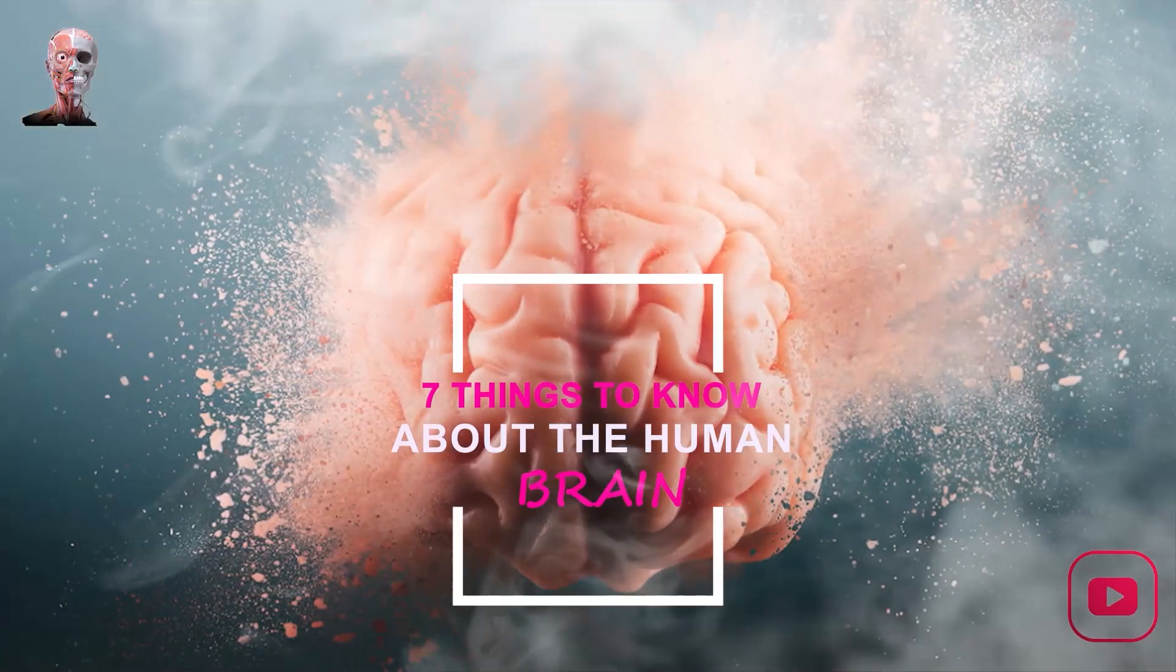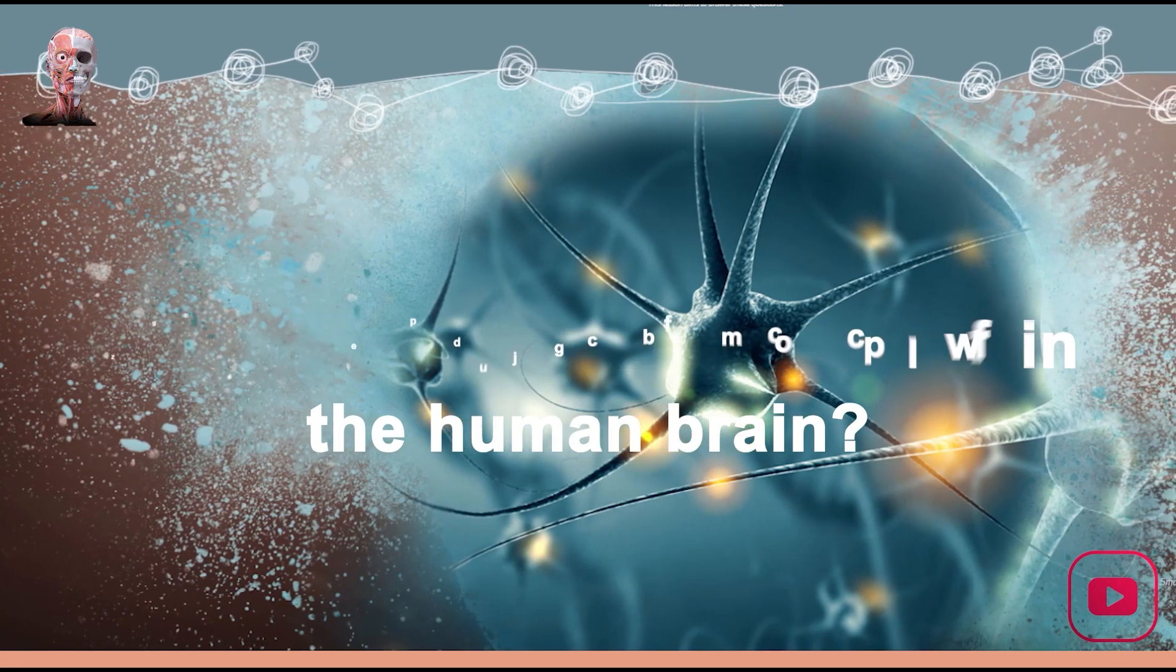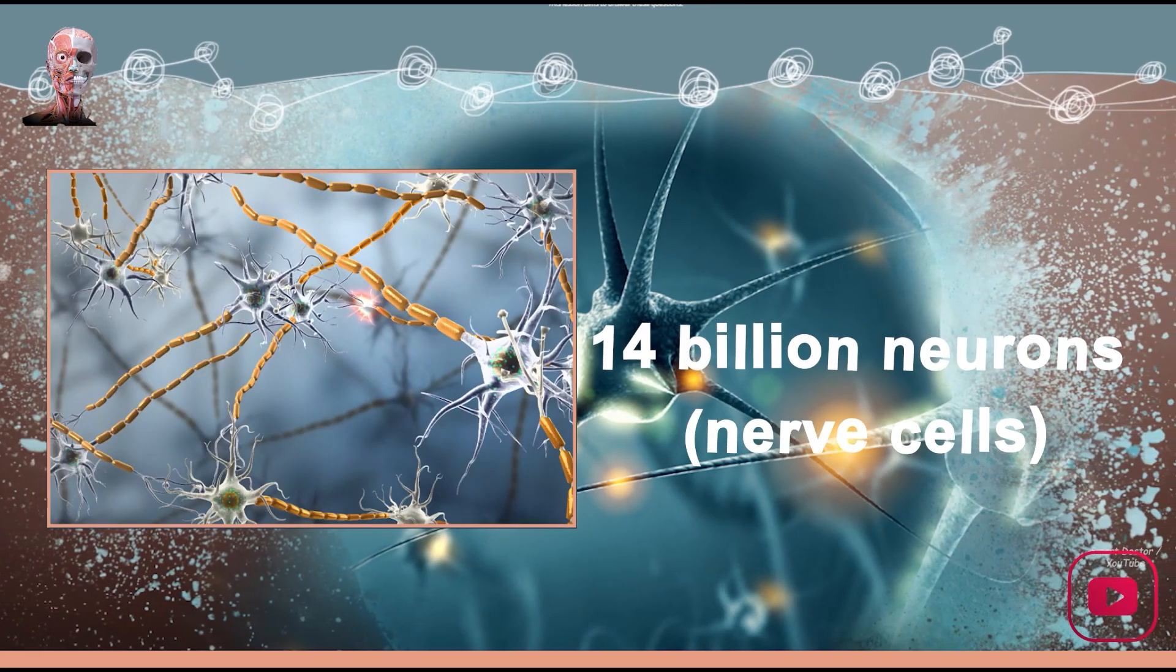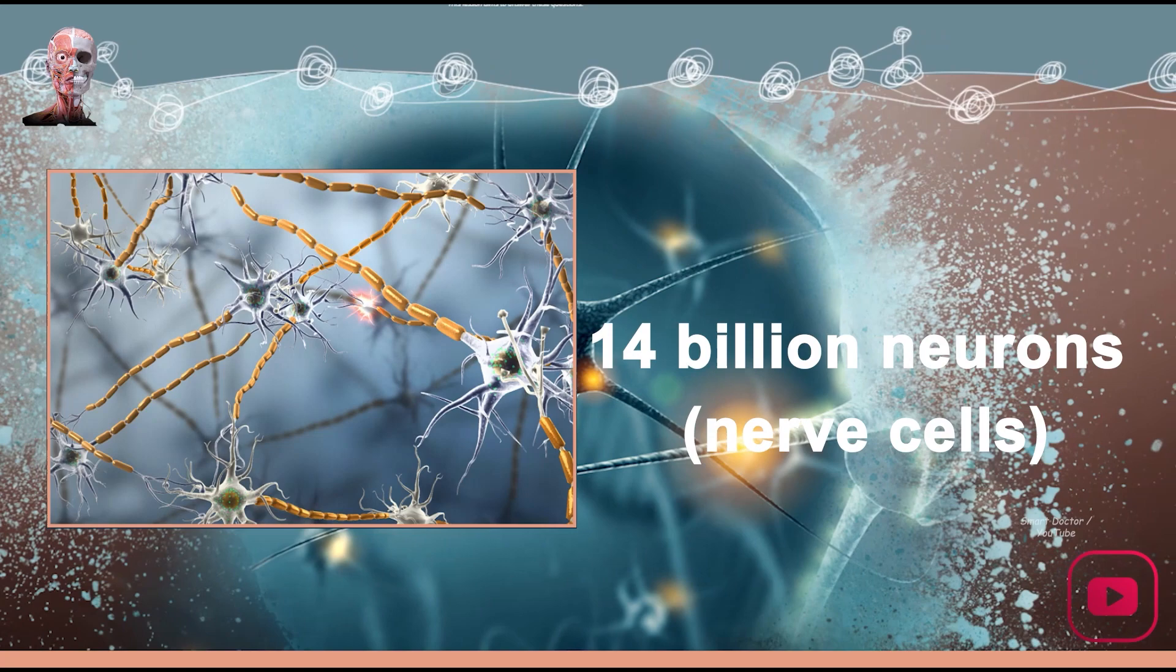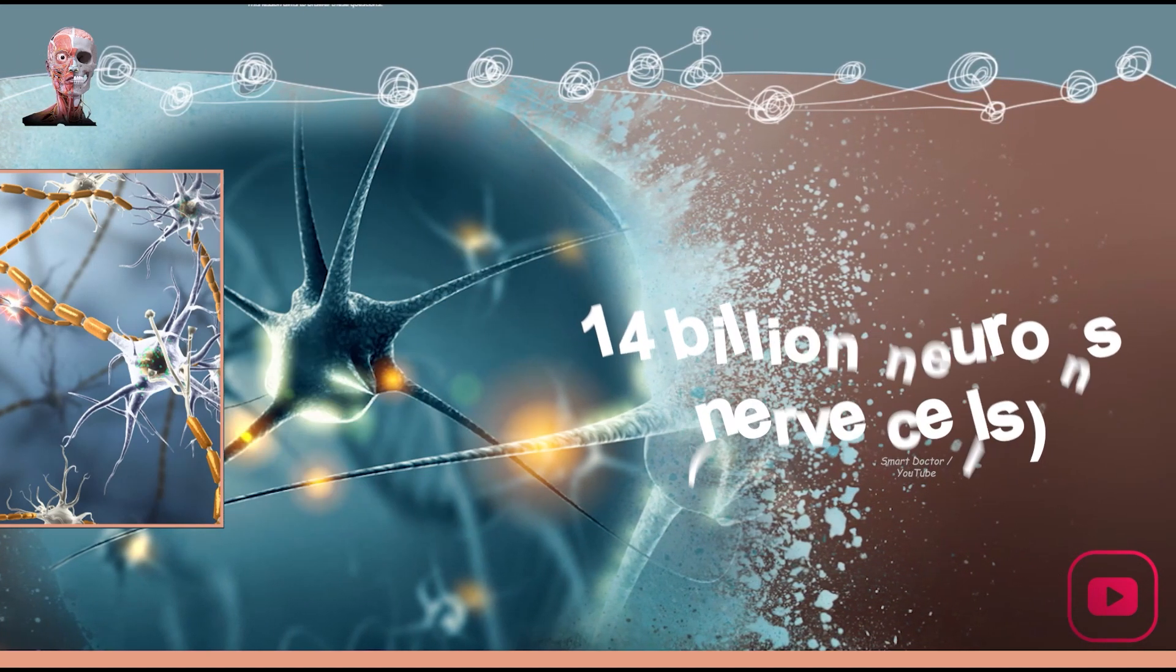7 Things to Know About the Human Brain. How many neurons are there in the human brain? The human brain contains approximately 14 billion neurons, nerve cells, which communicate with one another through nerve fibers called axons.